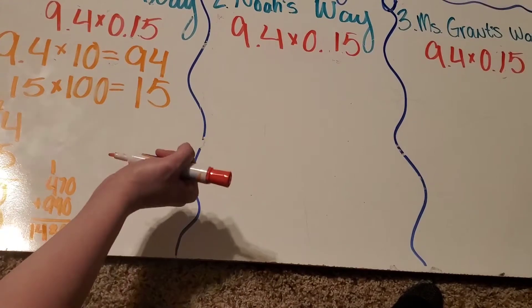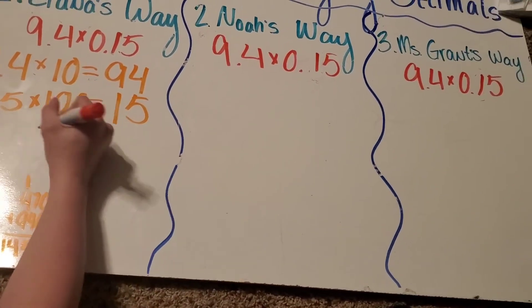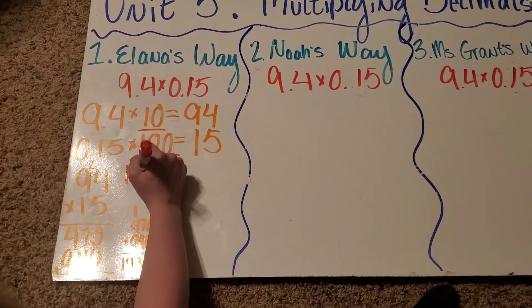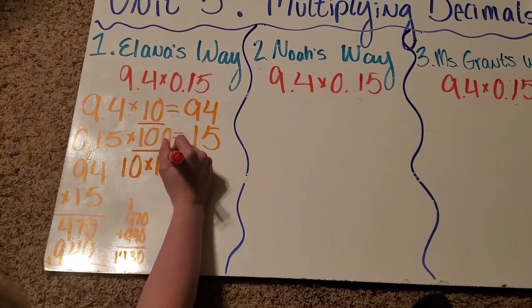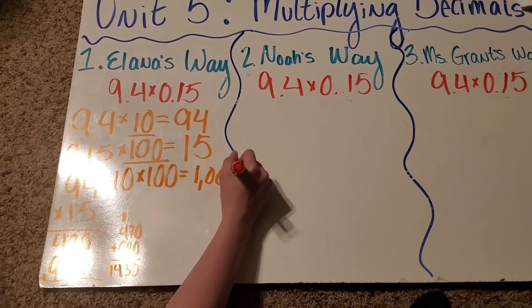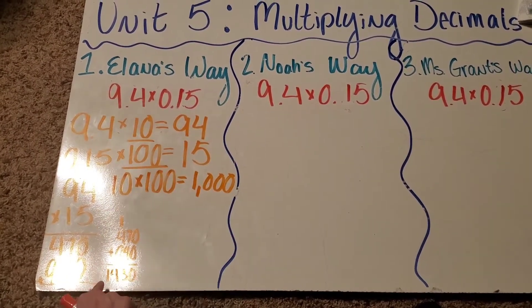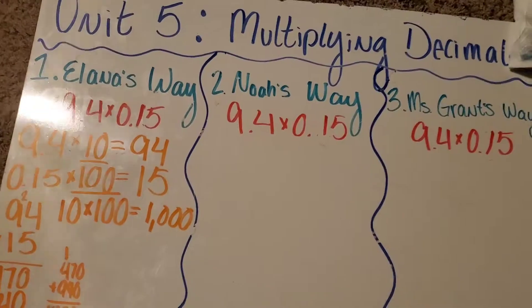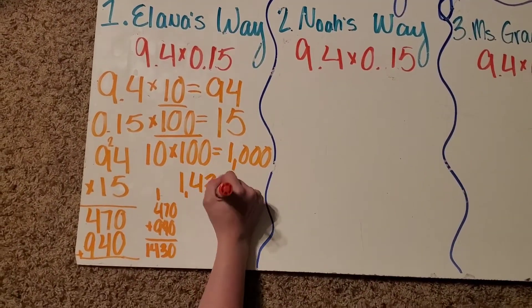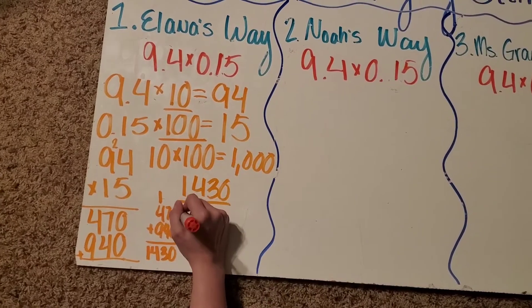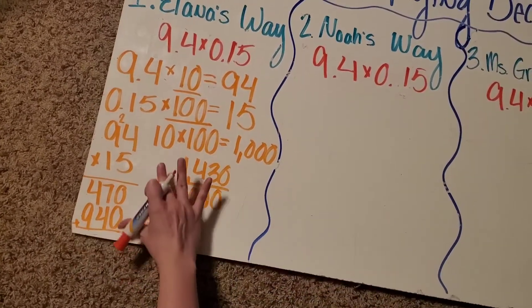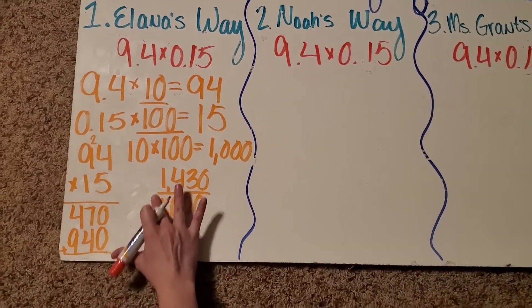But, that's not our actual problem. So remember, what we do now is we actually take 10 times 100, and I would get 1,000. So, I need to take our 1,430 and divide by the 1,000. So, I'm going to go ahead and erase this to give me more room.